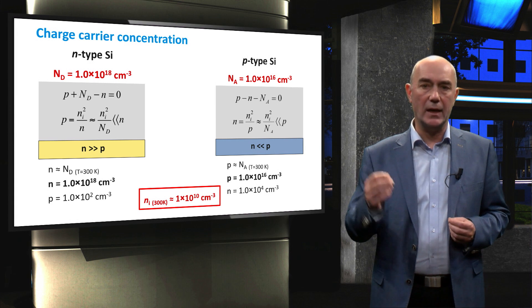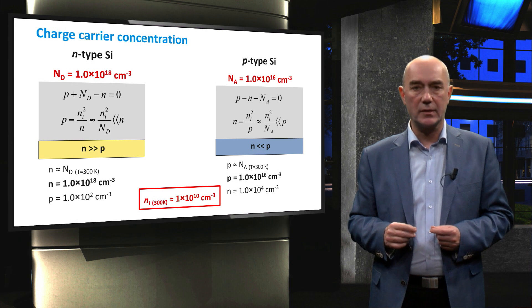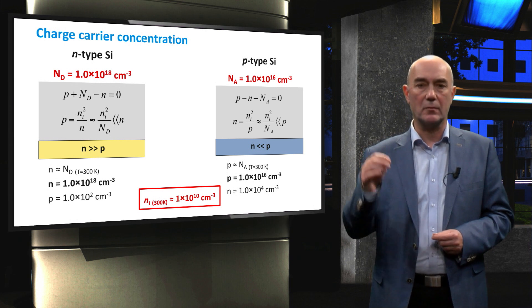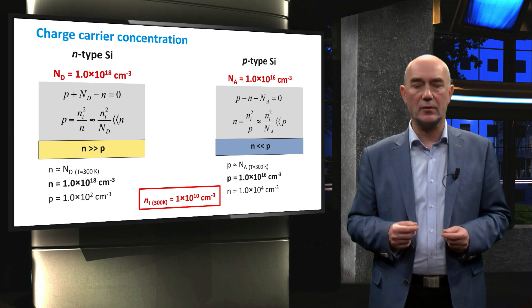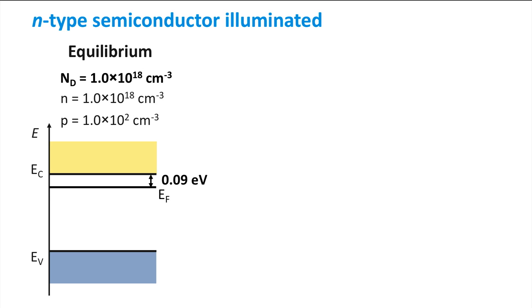We have looked at an intrinsic semiconductor under illumination. Let's now consider doped semiconductors. For N-type silicon with a donor concentration of 10¹⁸ per cubic centimeter, the electron concentration at equilibrium is 10¹⁸ per cubic centimeter and the hole concentration is 10² per cubic centimeter. This results in a Fermi level position of 0.09 electron volts below the conduction band edge.